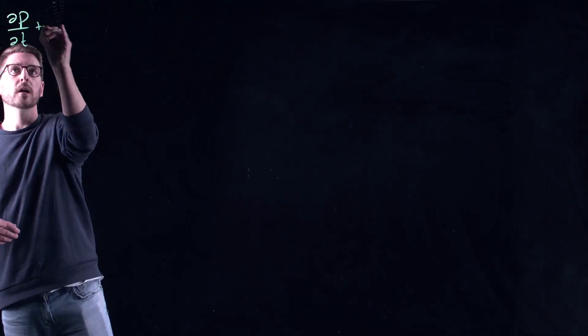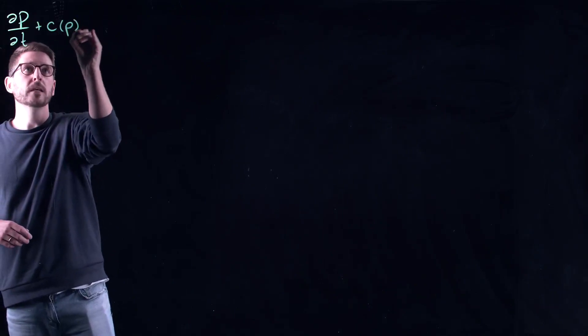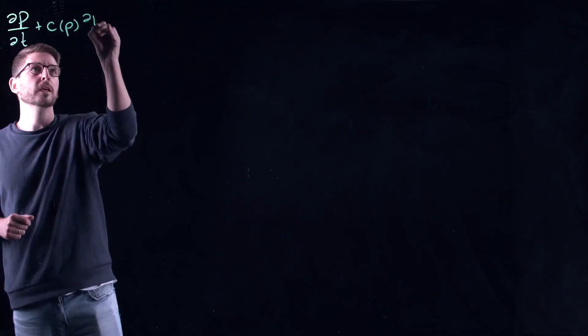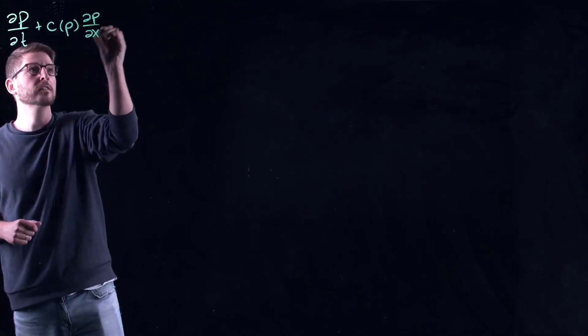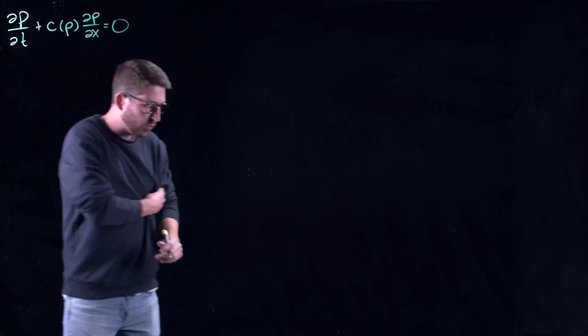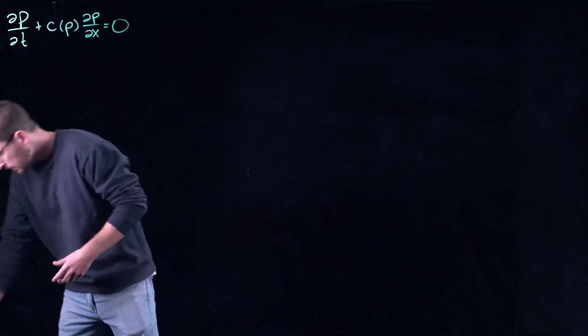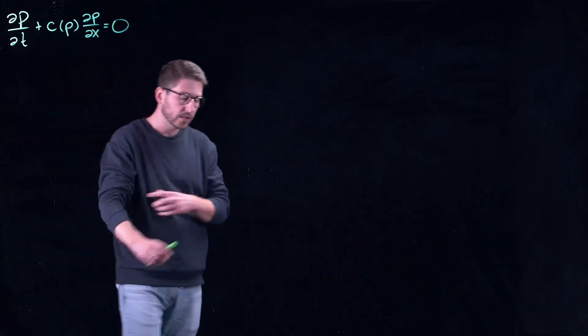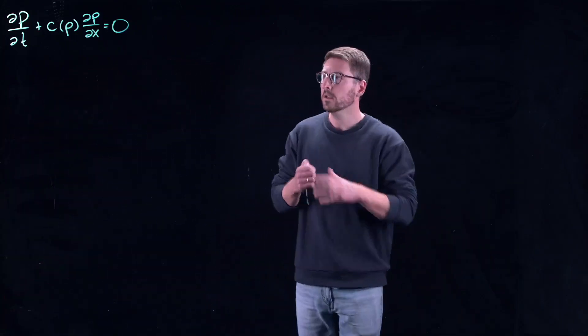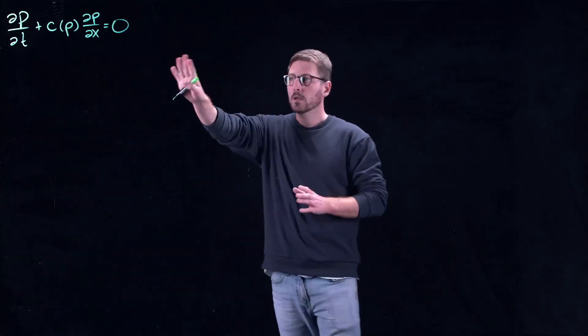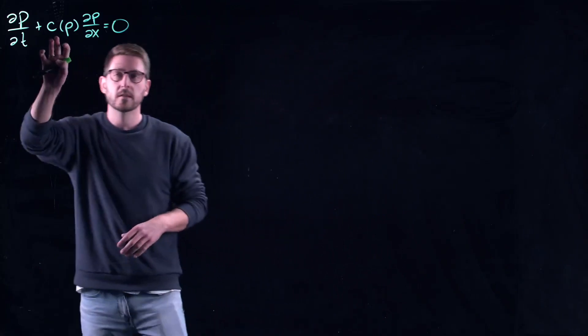Let's go back to our traffic model from the previous video. We had ∂ρ/∂t + c(ρ)∂ρ/∂x = 0. This is our quasi-linear partial differential equation. In this case c could be a linear or non-linear function of ρ, or a constant. It doesn't depend on space and time, so we refer to this as a homogeneous equation.